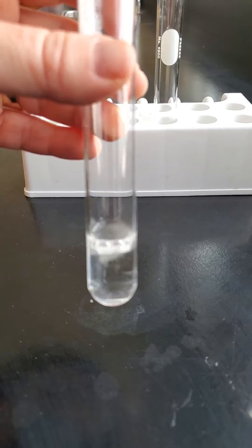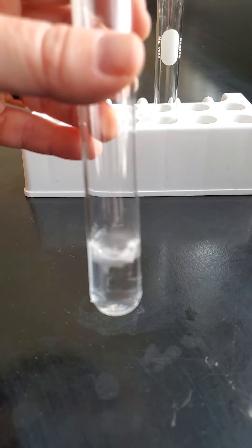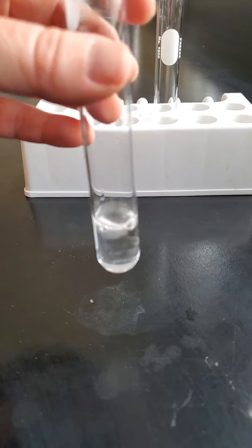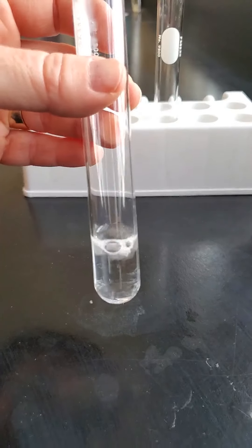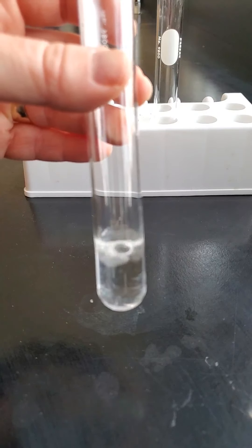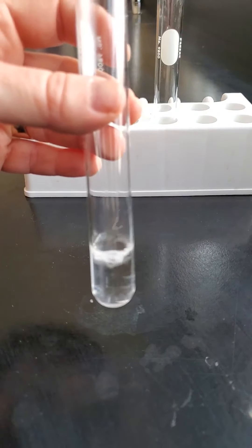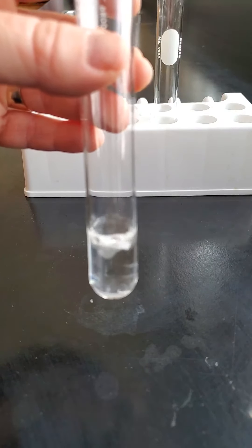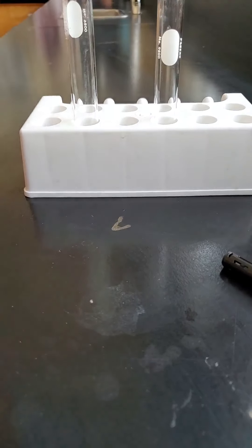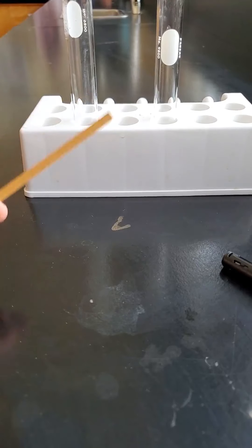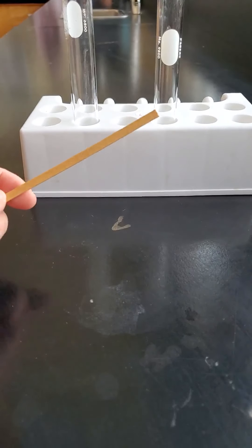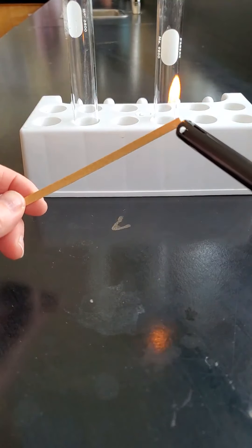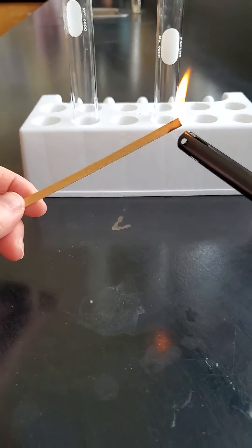Now what if we wanted to test what gas is being produced? We've got magnesium and hydrochloric acid - what do you think those bubbles of gas are? How could we check? Well, we've done this before. One way we can check is by using a burning splint. I've got my splint here and I'm going to light it on fire.